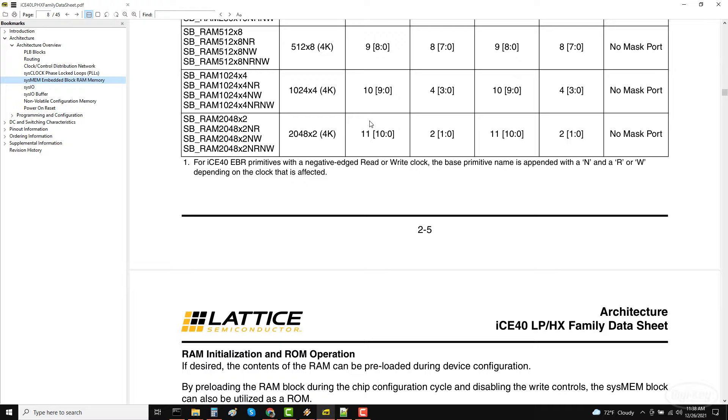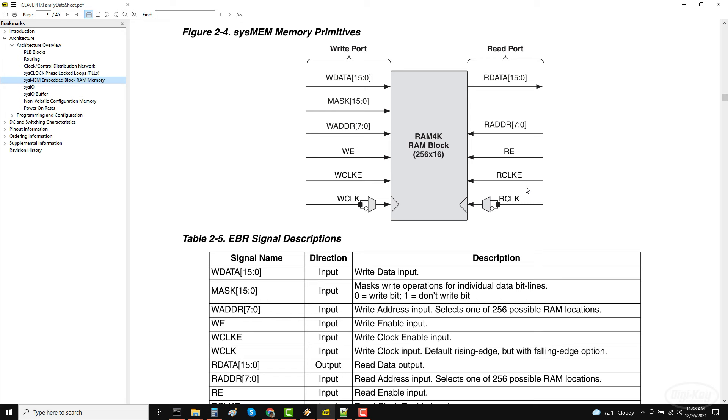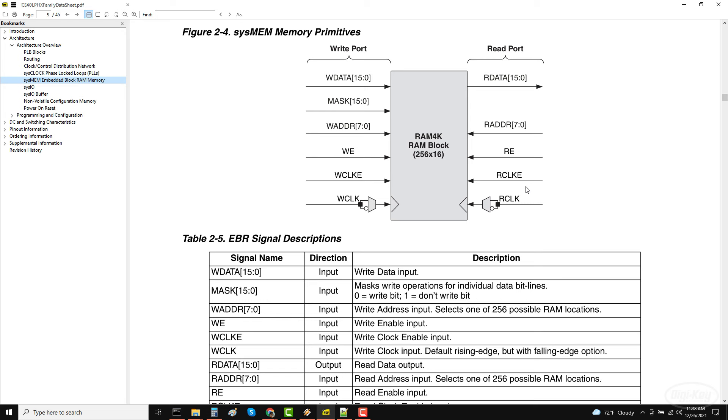Let's look at the diagram of the block memory in the datasheet again. You'll notice that the block RAM for the ice 40 has two different clock inputs, a read clock and a write clock. This allows us to read and write to and from the block RAM in separate clock domains. As a result, we can build some logic around this memory to create an asynchronous FIFO. Such queues are very helpful as they allow you to pass data between clock domains.